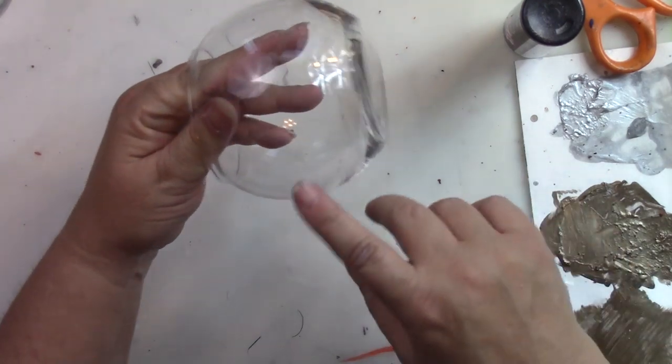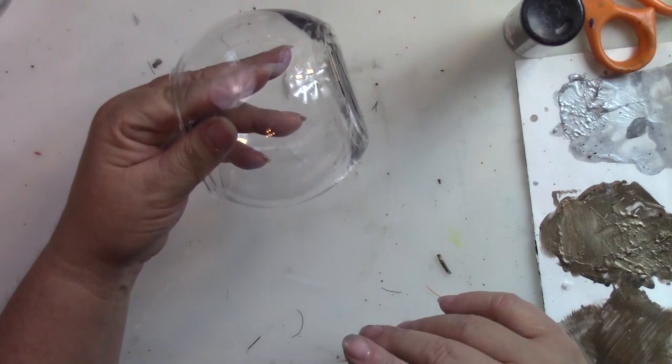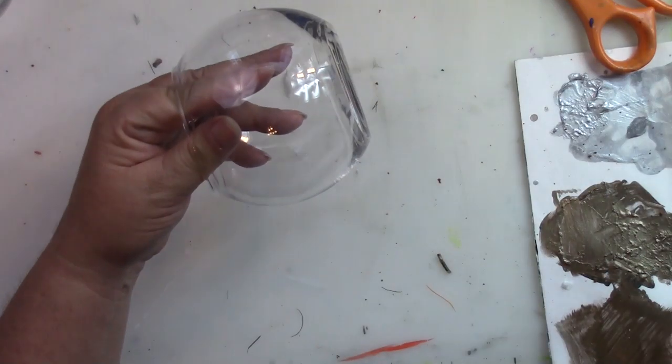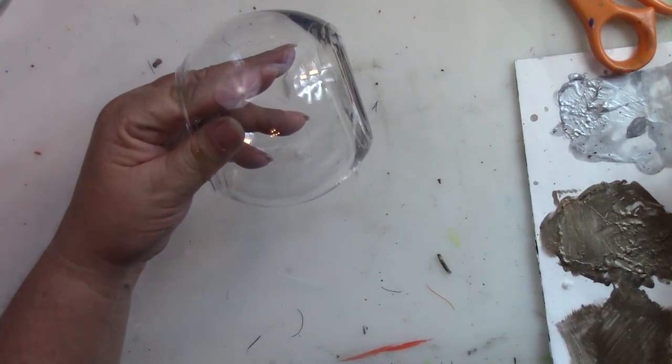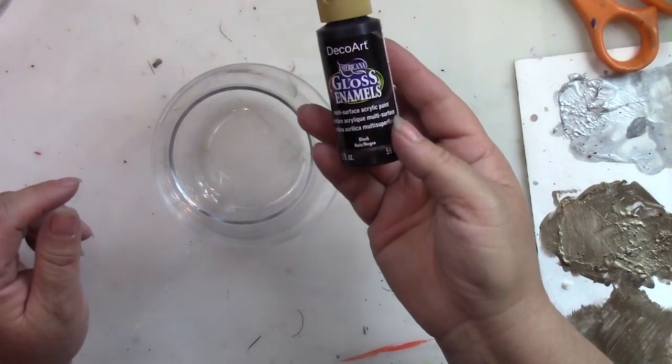I've washed the bowl with hot soapy water and then I came in with rubbing alcohol to take all of my oils from my hands off. The first application that I'm going to be putting on is the DecoArt Gloss Enamels.